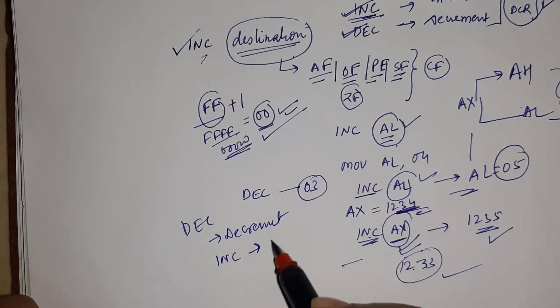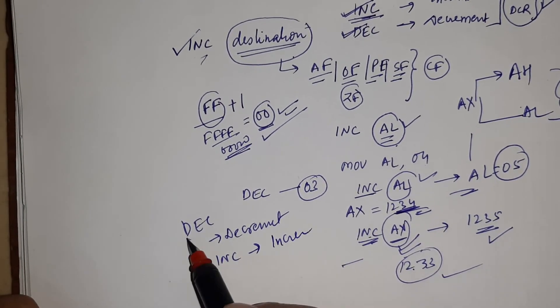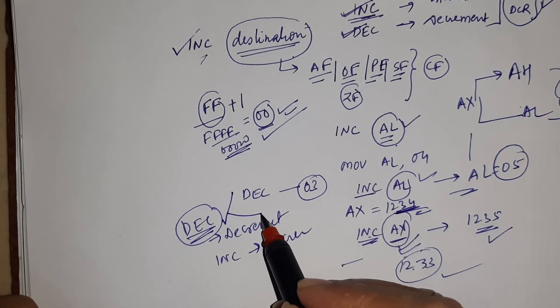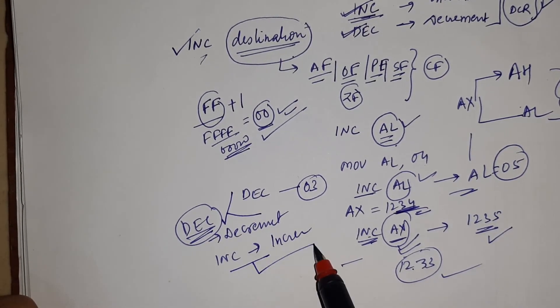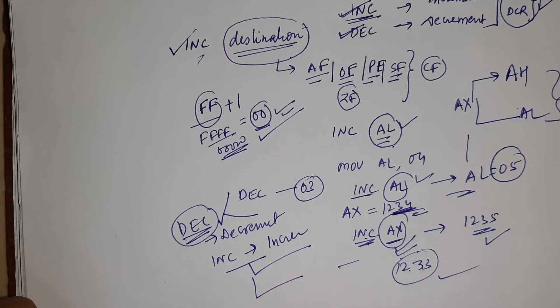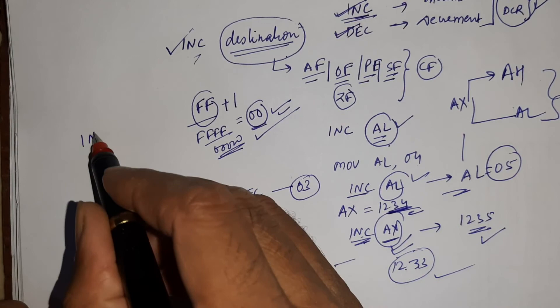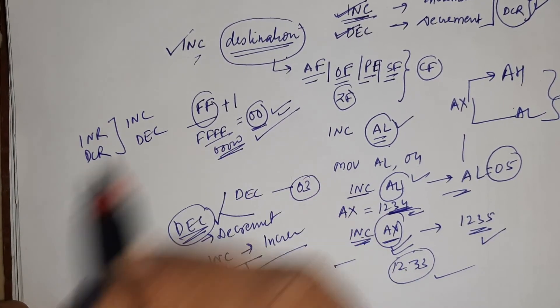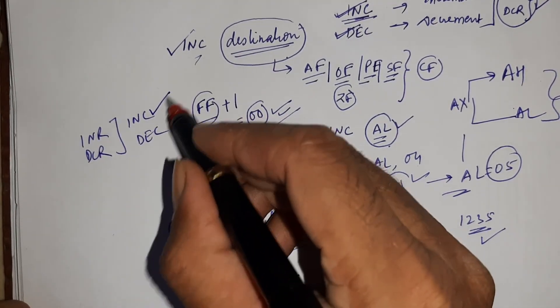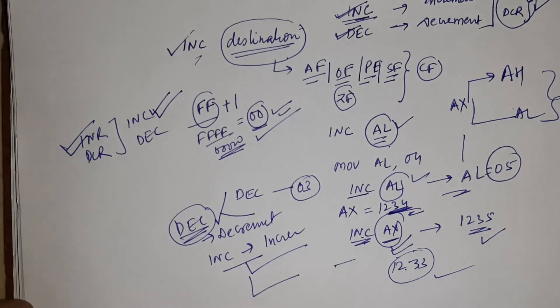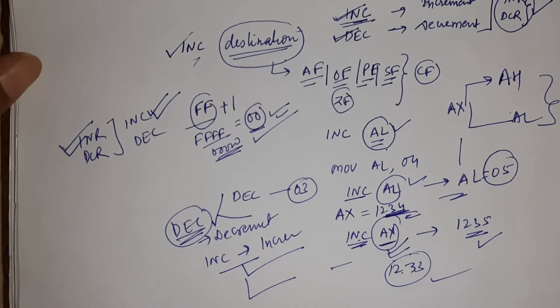And INC is used for increment. This can be used for 8-bit as well as for 16-bit. This is the difference between INR and DCR and INC and DEC. This is used for 8-bit as well as for 16-bit, and this is used for only 8-bit.